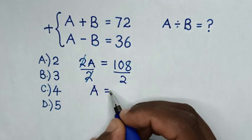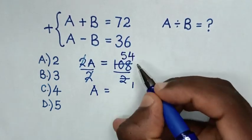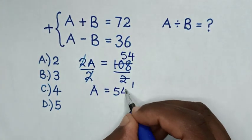Then, A is equal to, to simplify it by 1 and here by 54. Therefore, A is equal to 54.